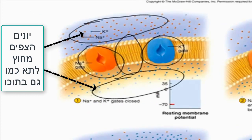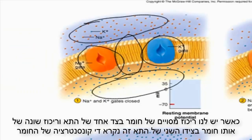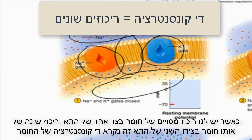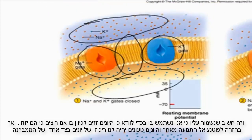This is called a gradient. When you have a specific concentration of a substance on one side of a membrane versus a different concentration of that same substance on the other side, you have what's called a concentration gradient. It's important that we maintain our concentration gradients because we will utilize these gradients to make sure that ions flow in the directions we need them to flow.